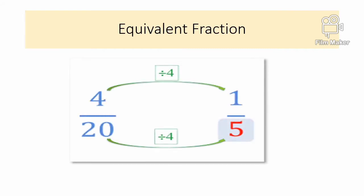Equivalent Fractions. Another set of examples: 4/20. 4 divided by 4 is 1, 20 divided by 4 is 5. So 4/20 is equal to 1/5.